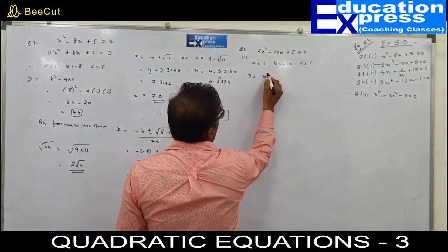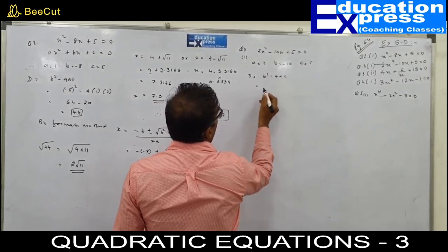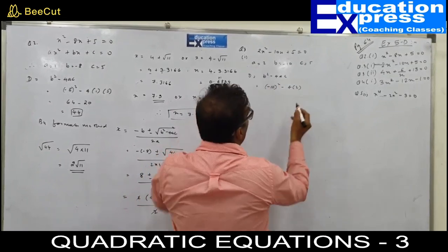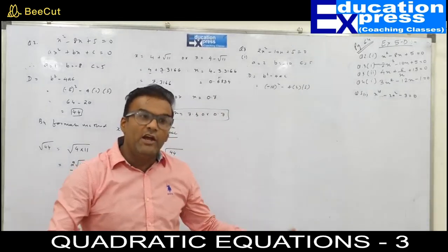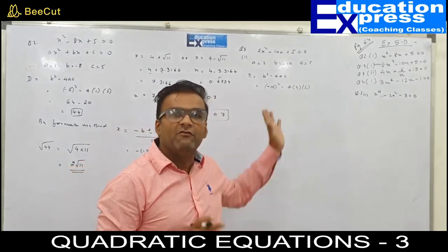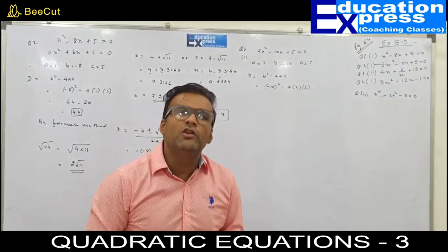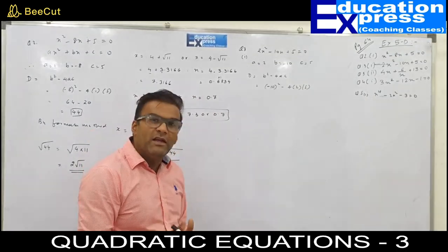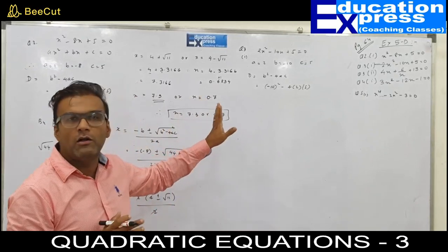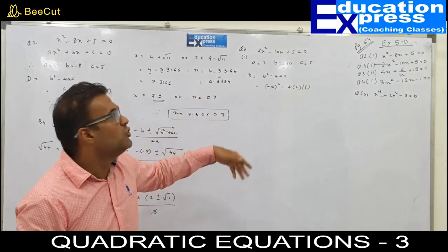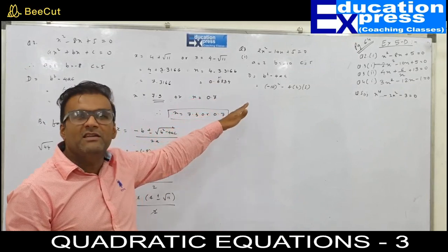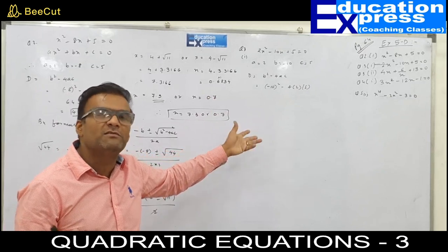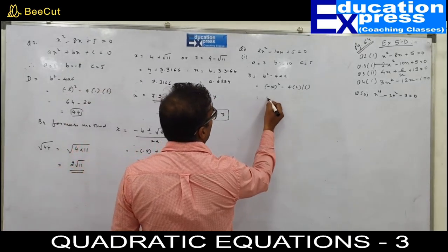Find the value of the discriminant: b squared minus 4ac. b squared is minus 10 squared, minus 4 into a which is 2, into c which is 5. That gives 100 minus 40, which makes 60. So by formula method, x equals minus b, plus or minus square root of 60, upon 2 multiplied by a. a is 2, so this becomes 10 plus or minus root 60 upon 4.